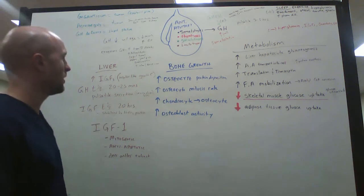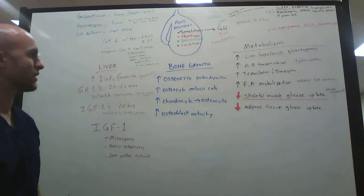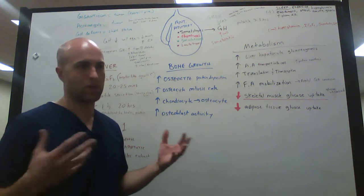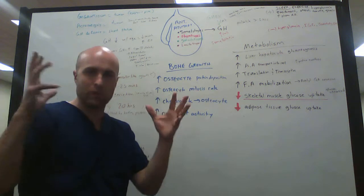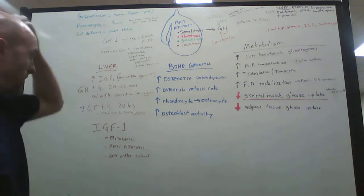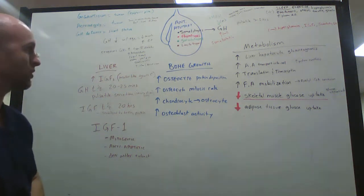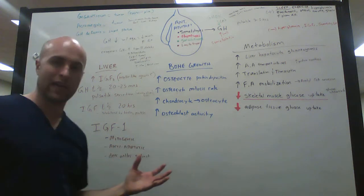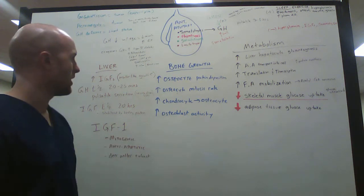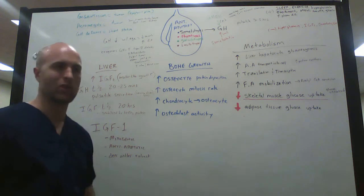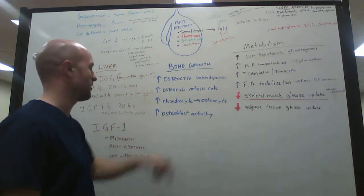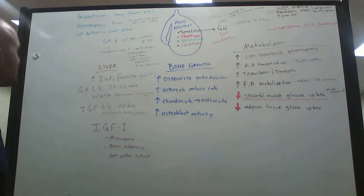What about bone growth? Growth hormone triggers an increase in osteocyte protein deposition, which makes sense. You see people with acromegaly or gigantism, and they'll have bigger bones, bigger hands, bigger feet. Their bone structure gets enlarged because the osteocytes are laying down more protein for their matrix. You're also going to see an increase in osteocyte mitosis rate, which means they're dividing faster, more chondrocytes changing into osteocytes, and more osteoblast activity. Osteoclasts break down bone, osteoblasts build up bone.